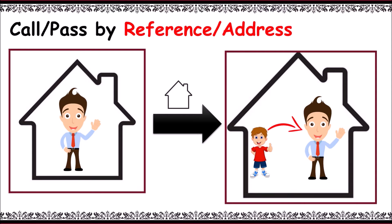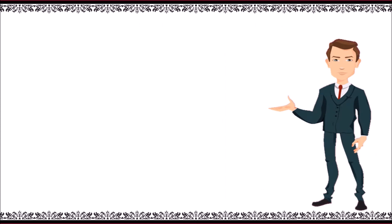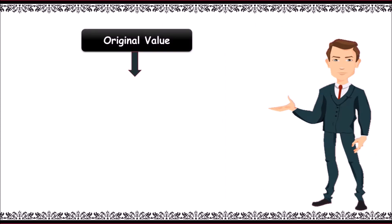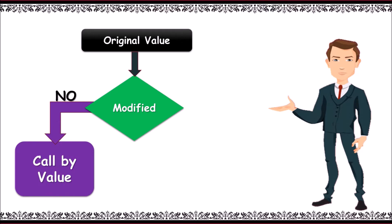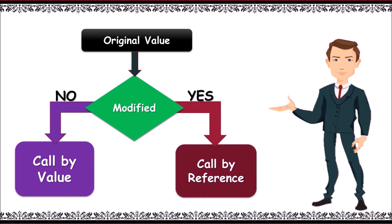Now the actual concept is: first, let's take an original value and try to modify it in another function. If the current value remains unchanged, we call it call by value. If the value has been modified, we call it call by reference.